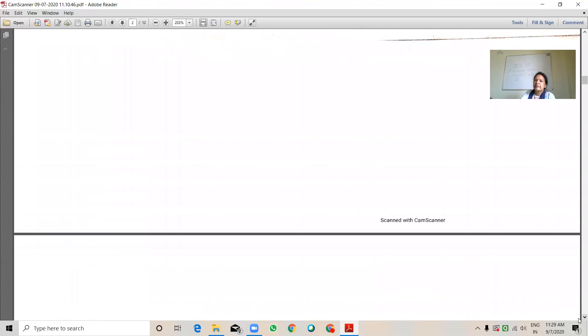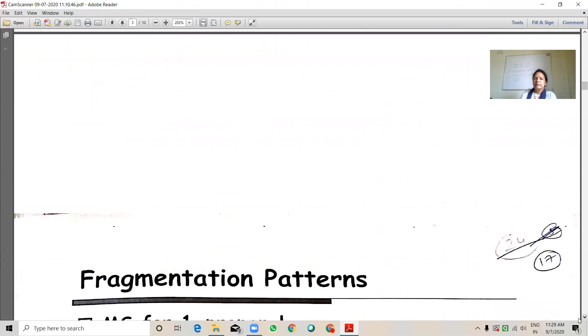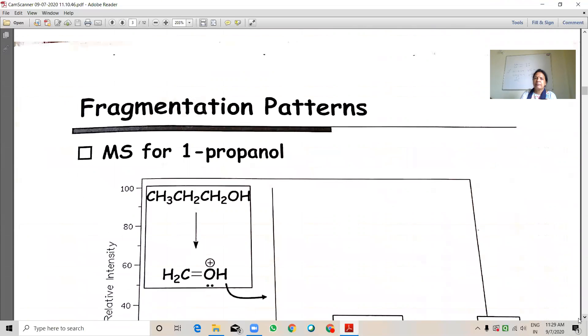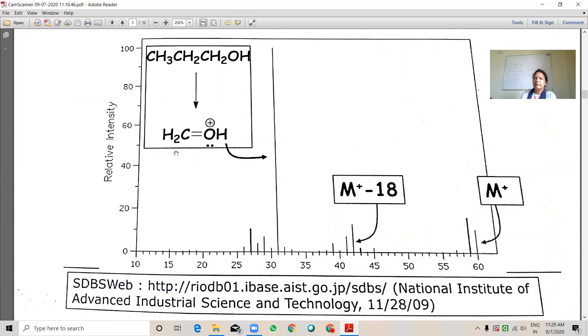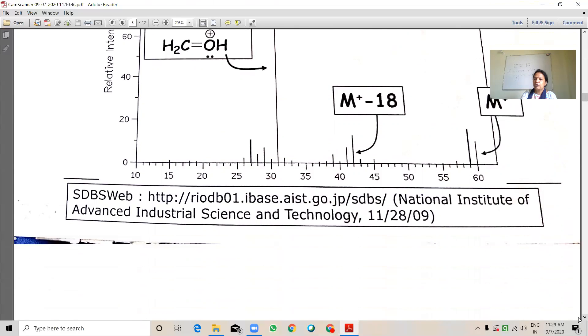So, this is the characteristic peak for alcohol. See, this is the example of 1-propanol. Here also, this oxonium ion, CH2 OH. This peak is at 31. It is a base peak. Molecular ion peak is a low abundance peak. And this peak is also observed due to the loss of water molecules. So, these are the characteristic peaks of alcohol molecules.